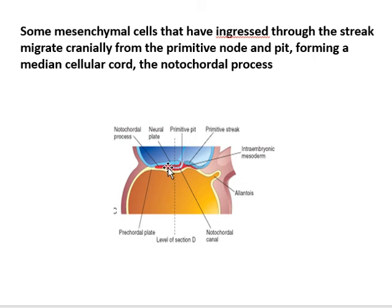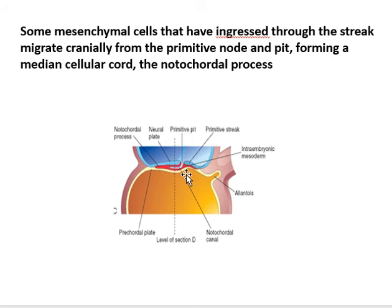When this notochordal process is formed, the second step is that there will be the extension of the primitive pit into this process. Here you can see the notochordal process present between the ectoderm. The canal is forming within the notochordal process. So it is the initial stage of the canal formation within the notochordal process. The primitive pit extends within the notochordal process.